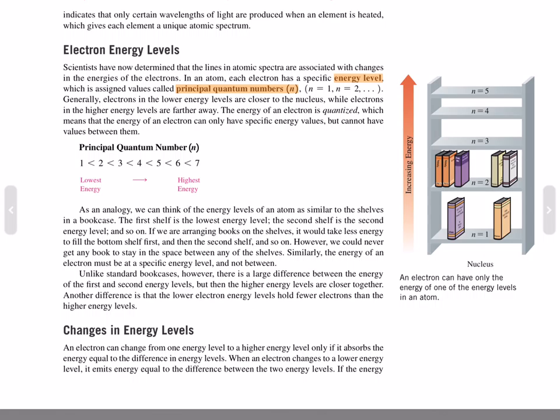Generally, electrons in the lower energy levels are closer to the nucleus, while electrons in the higher energy levels are farther away. The energy of an electron is quantized, which means that the energy of an electron can only have specific energy values but cannot have values between them. The principal quantum number n, from lowest to highest energy, is 1 < 2 < 3 < ... < 7.